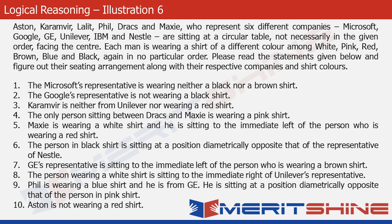The problem gives some data about six men who represent six different companies and who have come for a meeting where they're sitting in a circular arrangement. They're wearing shirts of different colors. We need to figure out their seating arrangement based on the data given. My advice would be to pause the video, read it carefully, and attempt it on your own first. Go to the solution only when you are done attempting the question on your own.